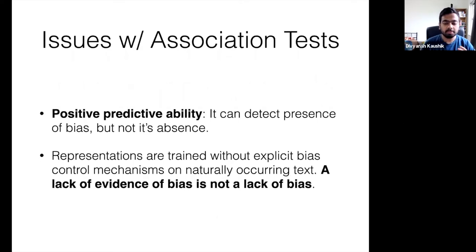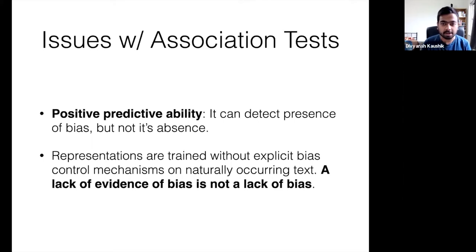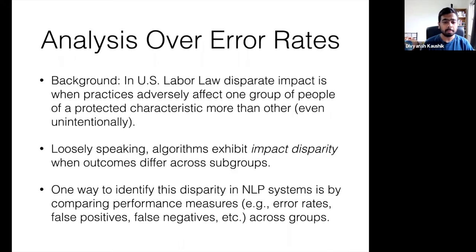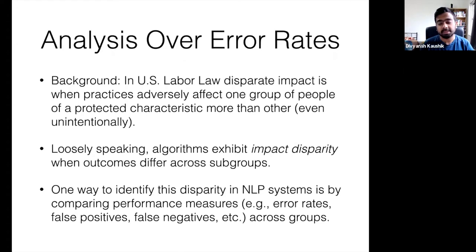That brings us to one of the issues with the association test. These tests can be used to identify whether models encode stereotypical or other harmful correlations. But a lack of evidence from these methods does not demonstrate a lack of bias, as we saw in the last two papers. Another way to analyze whether a model encodes certain biases is by analyzing model performance metrics. Error rates have been used widely in speech models.